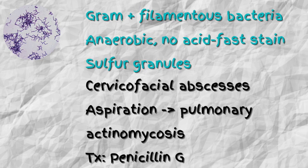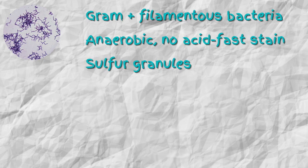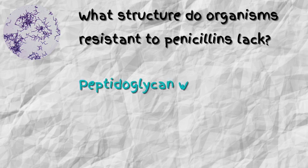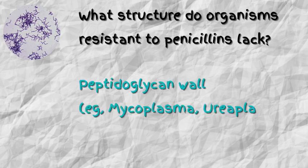What structure do organisms resistant to penicillins lack? That is a peptidoglycan wall. For example, mycoplasma and ureaplasma — those organisms do not have a peptidoglycan wall, so they are resistant to penicillins.